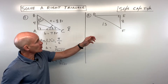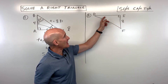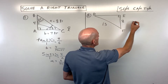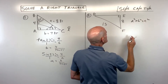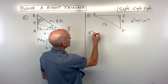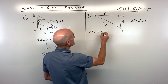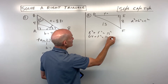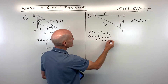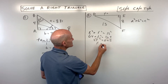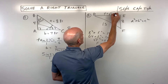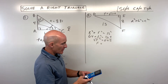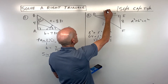Example 2 is a bit more challenging: we're given two sides but no angles. The first step is to use the Pythagorean theorem since we have two sides of a right triangle. We have 8 squared plus f squared equals 13 squared, so 64 plus f squared equals 169. Subtracting 64 from both sides gives f squared equals 105. Taking the square root, f equals the square root of 105, which is approximately 10.25.